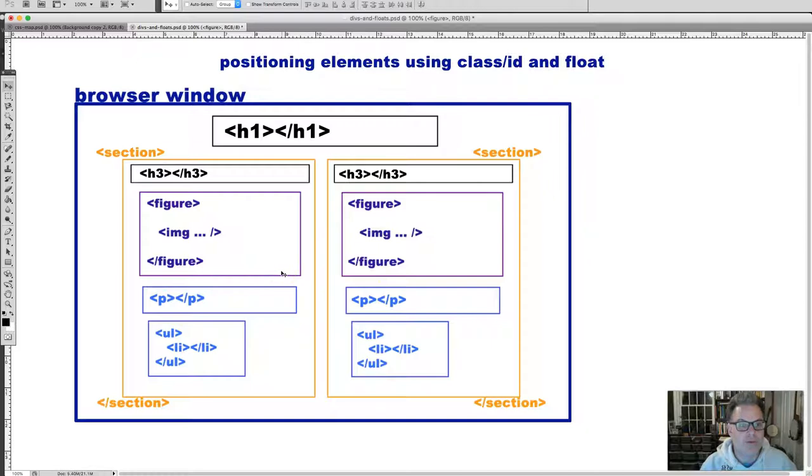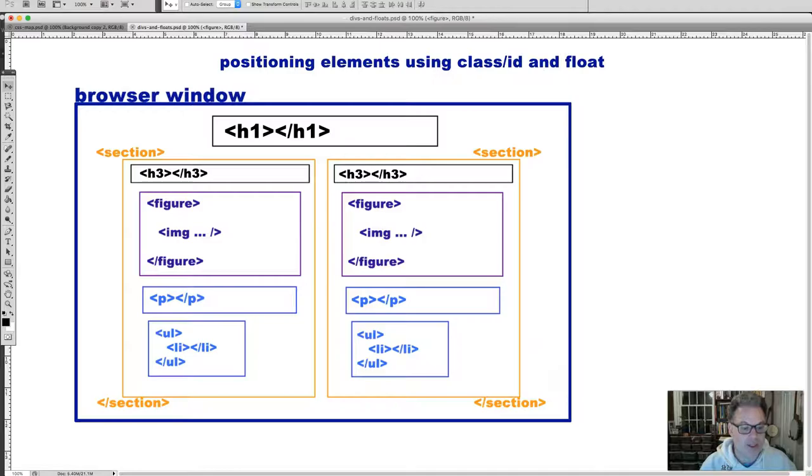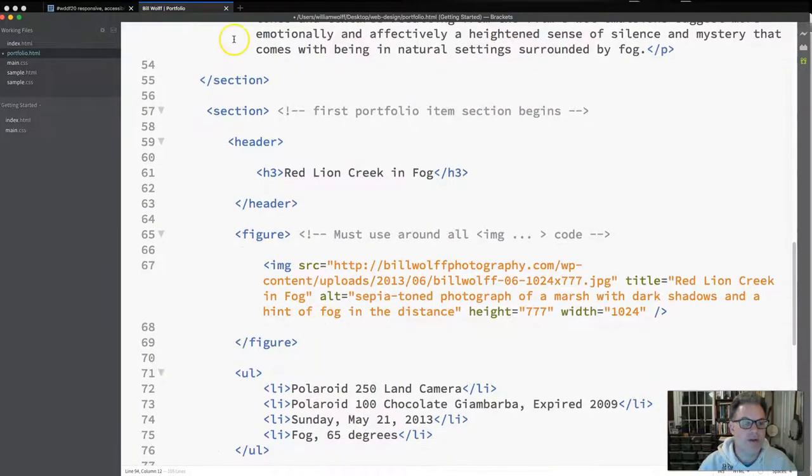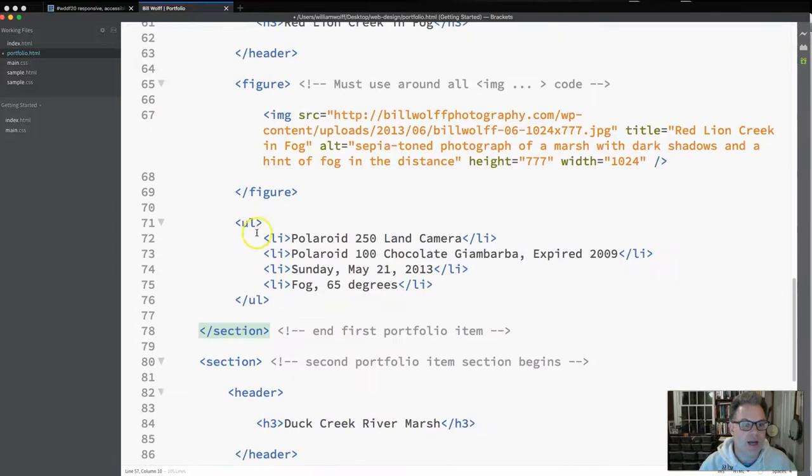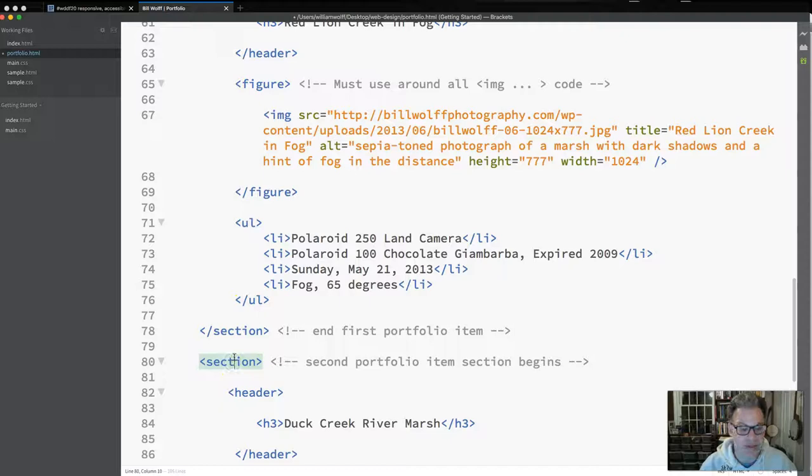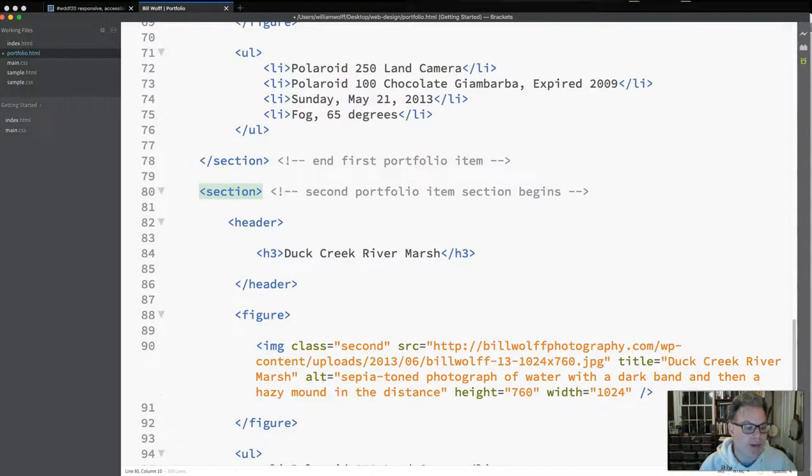Now the question becomes, how do we get things to go side by side? How do we make them appear so that even though we have sections here that are coded just as section, how do we make one appear in one place and one appear someplace else? How do you provide them with unique representation or coding so that they behave differently when they are on the page?